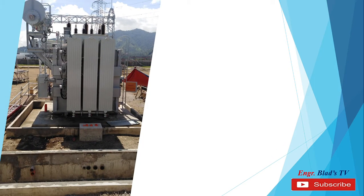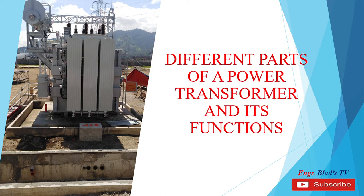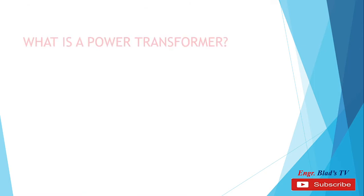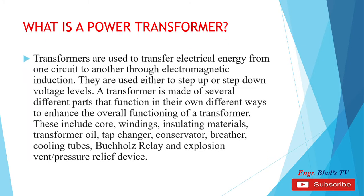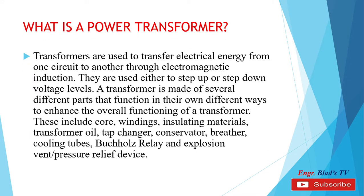Good day everyone! In this video we will discuss the different parts of a power transformer and its functions. Transformers are used to transfer electrical energy from one circuit to another through electromagnetic induction. They are used either to step up or step down voltage levels. A transformer is made of several different parts that function in their own different ways to enhance the overall functioning of a transformer.